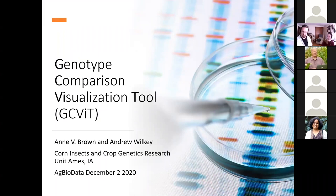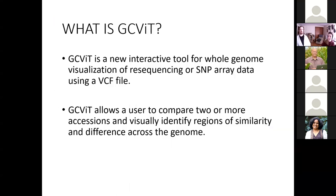My name is Anne Brown and this is Andrew Welke. Today we're going to be talking about the Genotype Comparison Visualization Tool, or gcivet for short. gcivet is a new interactive tool for whole genome-wide visualization of resequencing or SNP array data. It takes a VCF file as input and allows a user to compare two or more accessions and visually identify regions of similarity and differences across the whole genome.